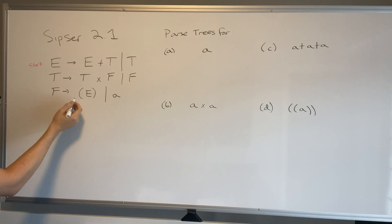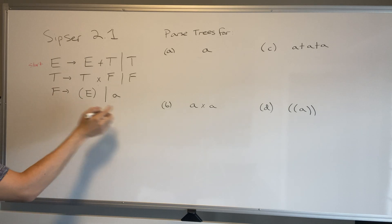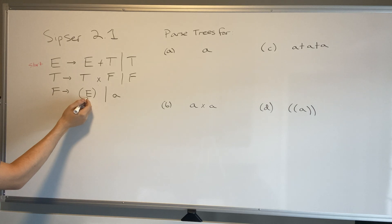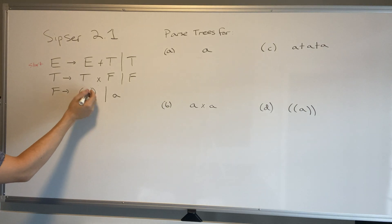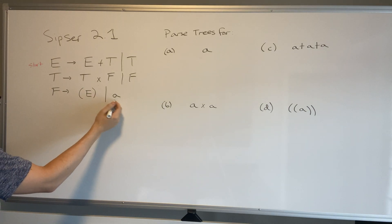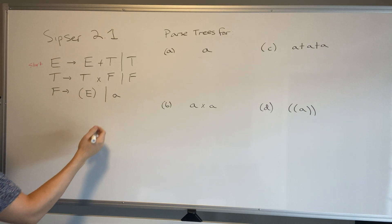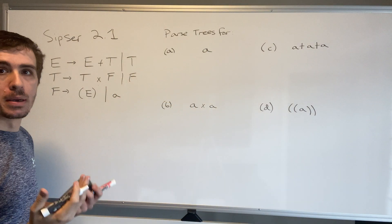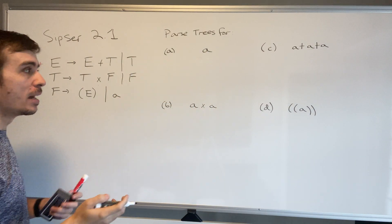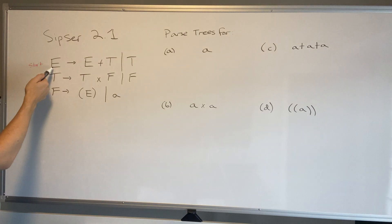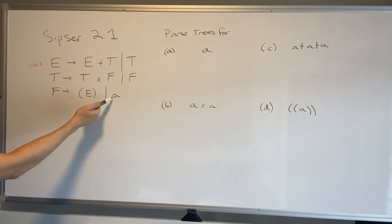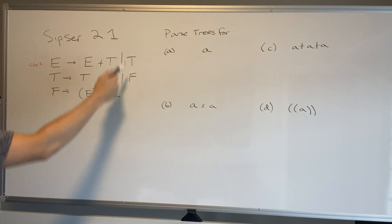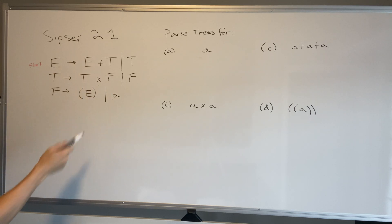F is going to go to left parenthesis — also a terminal because we see it over there — then variable E, and then right parenthesis; or just the terminal 'a'. For all of these strings we can clearly see that they all involve the letter 'a', so we have to get from up here down to 'a' in some way, because there's no 'a' anywhere else other than right here.